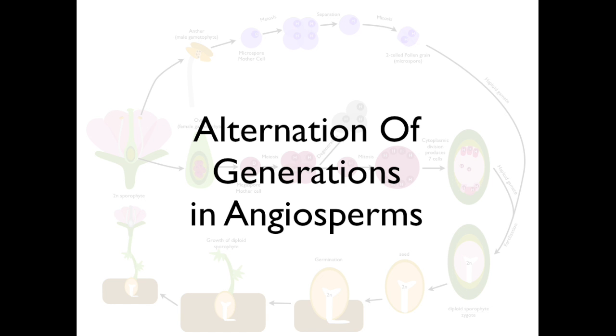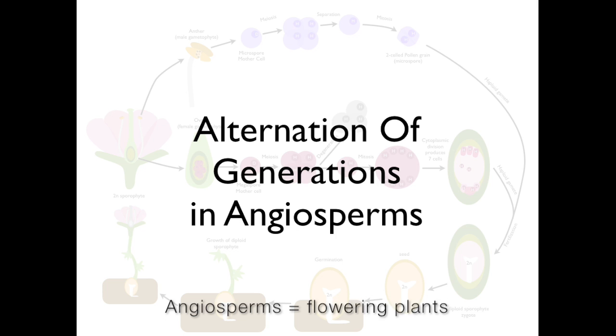Today, we are going to talk about the concept of alternation of generations with a focus on angiosperms, or flowering plants. This is part one of a five-part series.